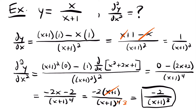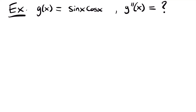Let's look at another example. It wouldn't be an example video if we didn't look at some trig functions. Here we have the function g of x equals sine x times cosine x, and we want to know g double prime of x — the second derivative of g of x. Let's start by finding our first derivative. We have a product rule here: two functions, sine x and cosine x, being multiplied together, so we have to use the product rule.